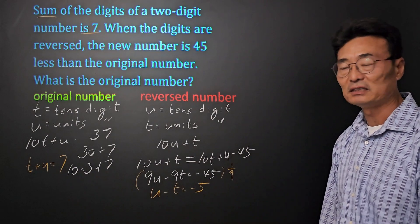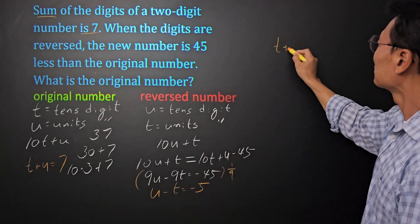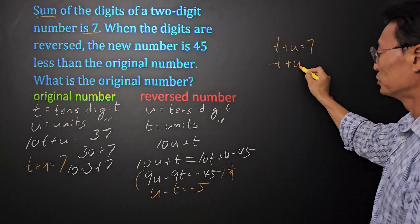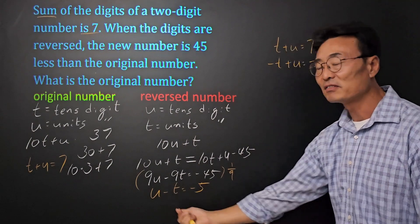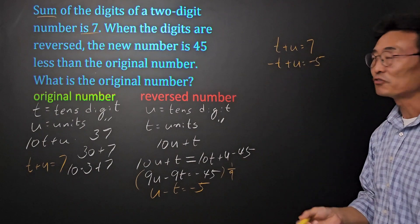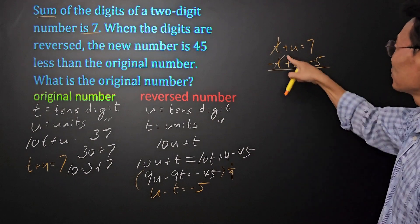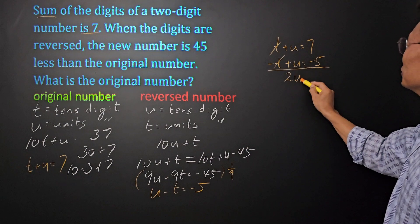And let's do it up here. We have t plus u equals 7, and then negative t plus u equals negative 5. All I did was switch the u minus t into negative t plus u, so that when we do elimination or add up and down, it's easier to cancel things out. So the t and the negative t cancels out, and the u and the u, we get a 2u.